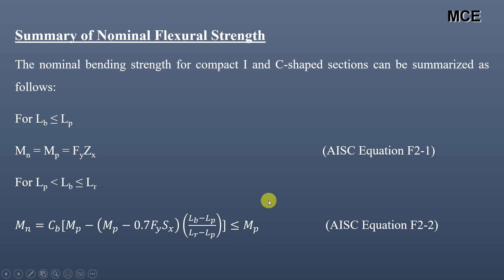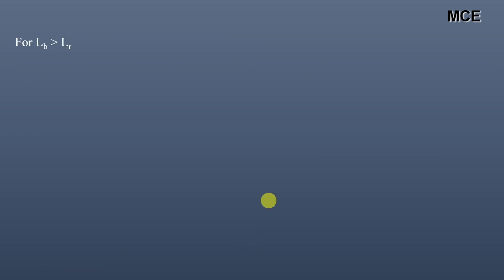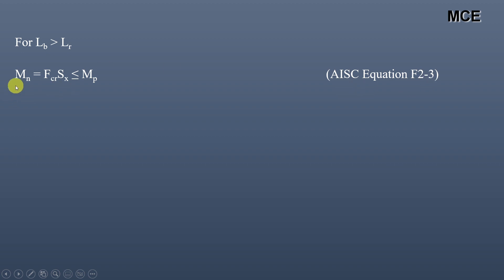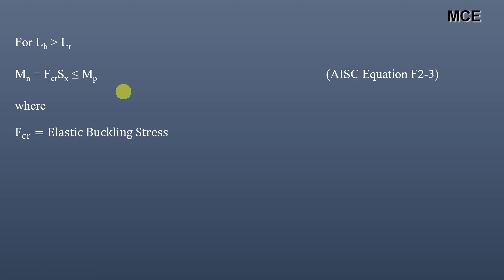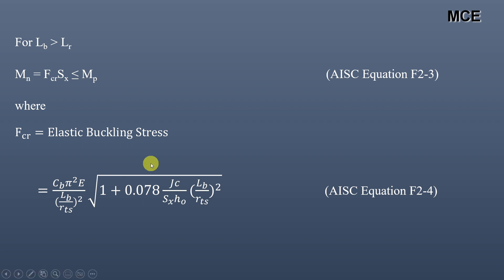If LB is greater than LR, the nominal moment strength is given by AISC equation F2-3, which equals FCR times SX, and must also be less than or equal to MP. FCR is the elastic buckling stress given by AISC equation F2-4, and SX is the elastic section modulus.